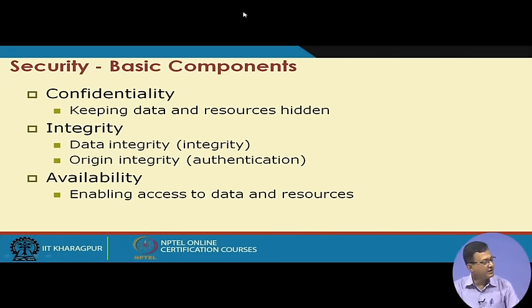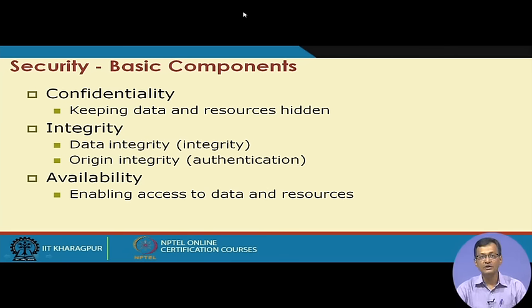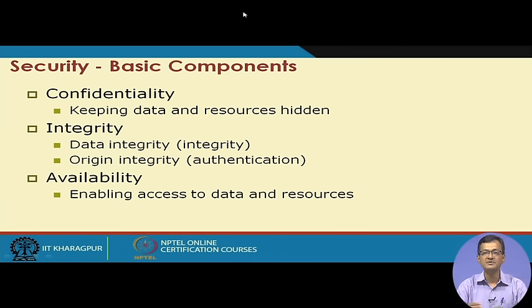Looking at security, there are three basic components: Confidentiality, Integrity, and Availability — the CIA components. Confidentiality deals with keeping data and resources hidden. Integrity means data integrity is maintained — whatever is sent from A to B, B receives the same thing, and the source is authenticated. Availability means enabling access to data and resources. Most attacks today are denial-of-service attacks where availability is compromised, such as DoS or DDoS attacks.